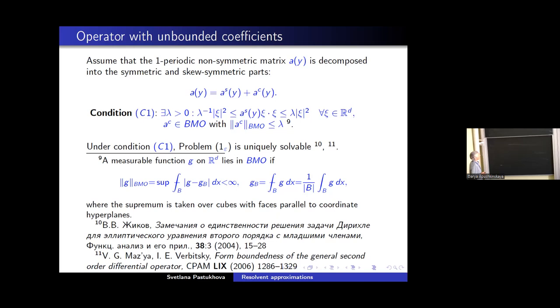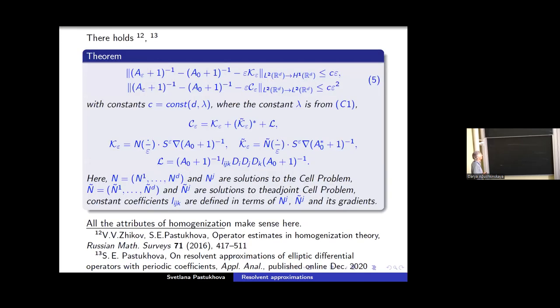Then under condition C1 the problem one ε is uniquely solvable. All the attributes of homogenization make sense. And we can give here the following estimates five in operator energy norm from L^2 to H^1 and estimate in L^2 operator norm with accuracy ε^2. Here we can see the known self-adjoint problem, that is why I show you correcting operator, which is much more complicated than in estimate three. You see here K_ε^* which is the counterpart of K_ε for the adjoint operator to A_ε.